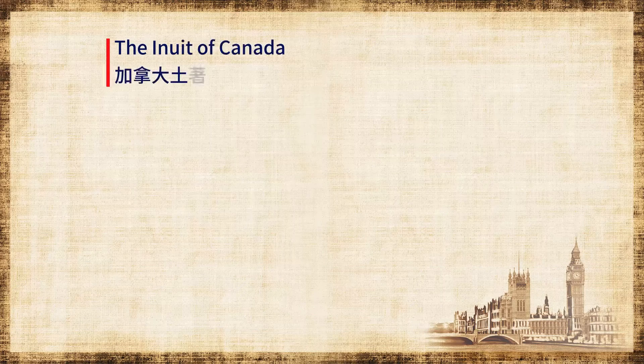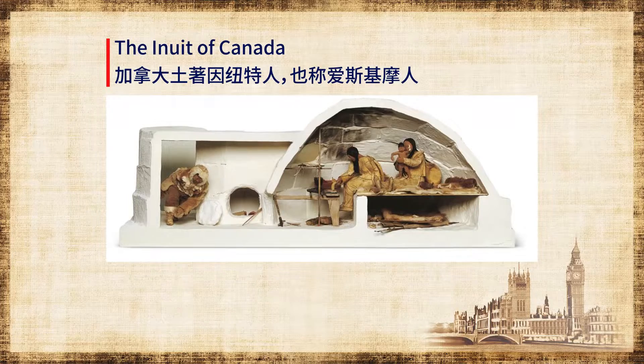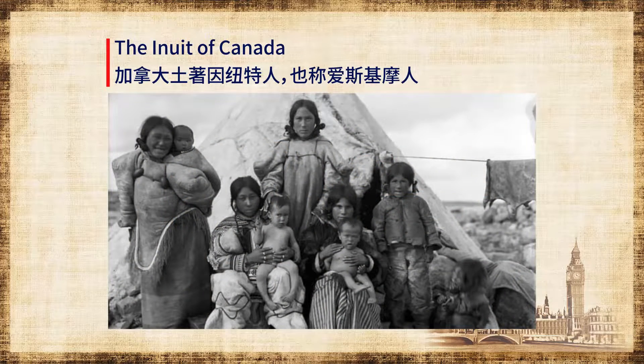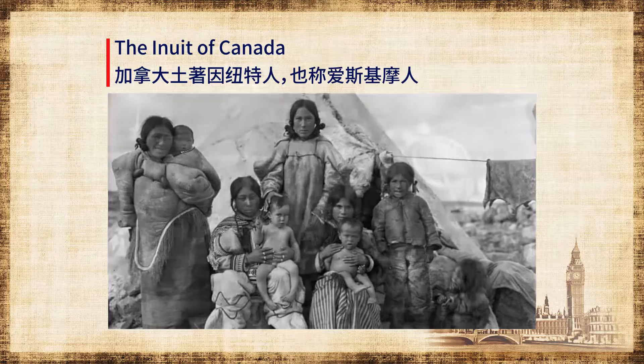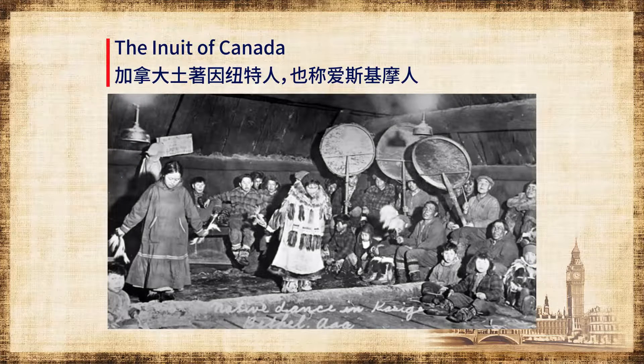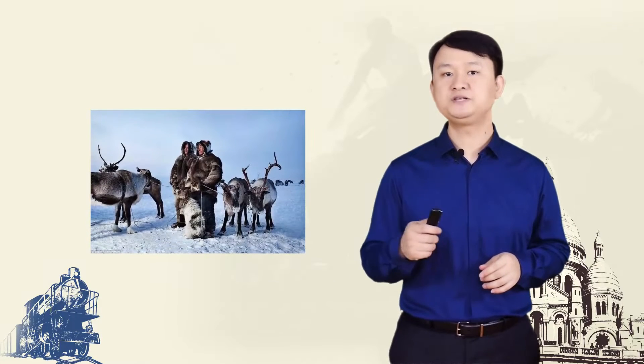In addition to the First Nations, Canada's constitution officially recognizes two other special groups of original peoples. In the Far North are the Inuits, also called Eskimo, a group who adapted to the harsh conditions of the Arctic climate by hunting whales, seals, caribou and polar bears. Today, some of these people still live this way. Others can now make a living through selling their carvings and handicrafts, which are prized by collectors for their beauty.